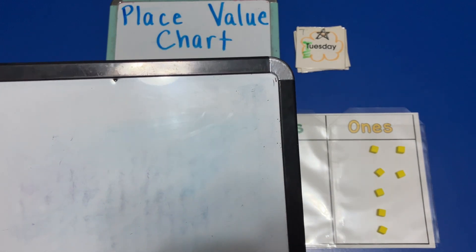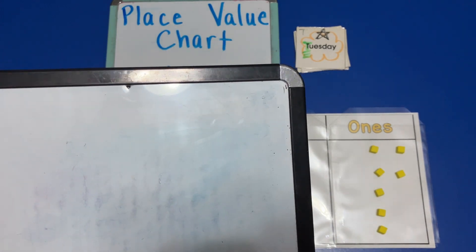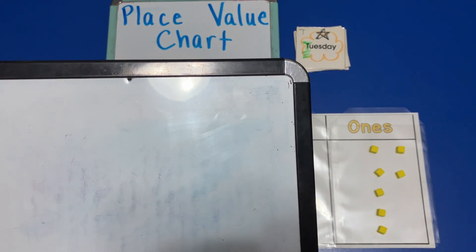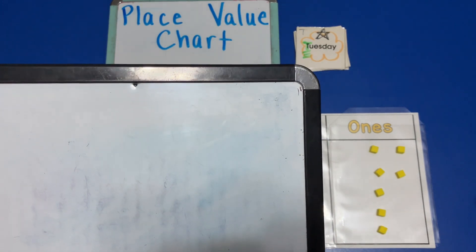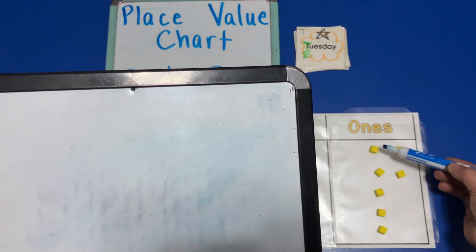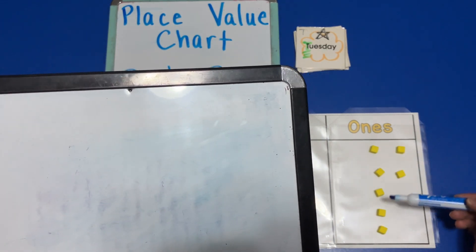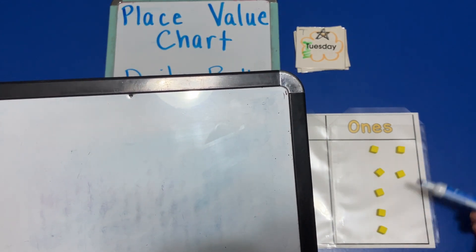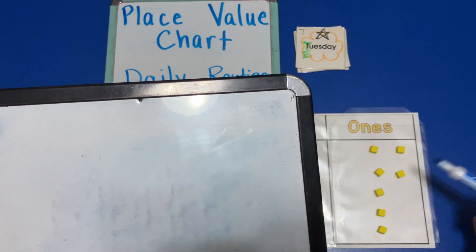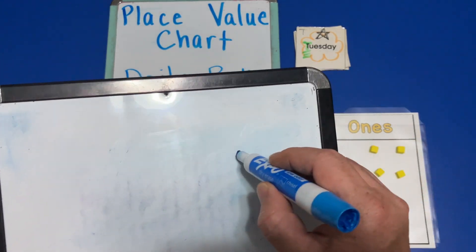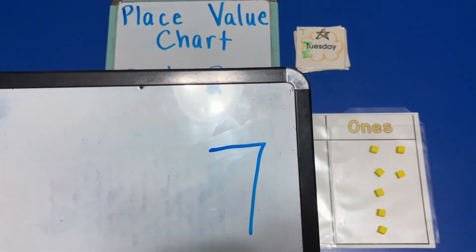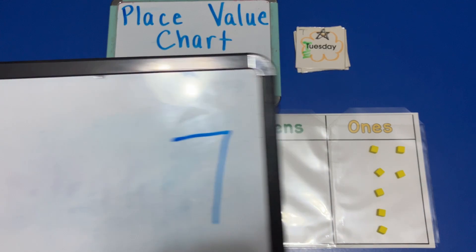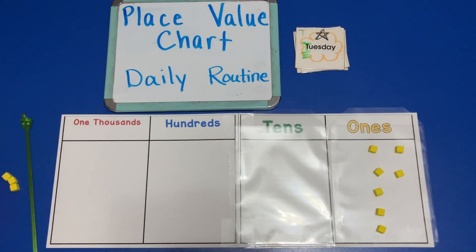On Tuesday the value of the units or the base-10 blocks on our place value chart is one, two, three, four, five, six, seven. So on Tuesday we have seven on our place value chart.